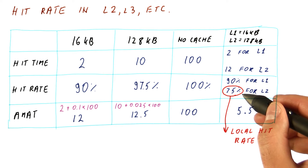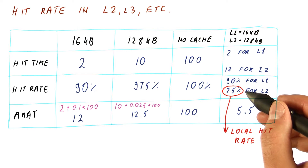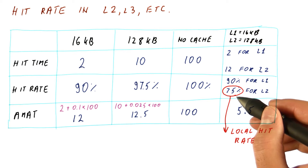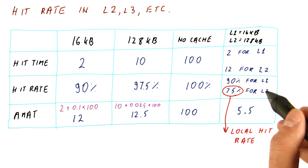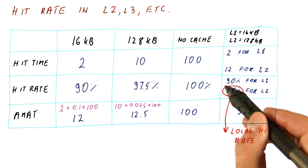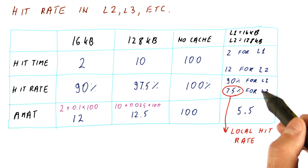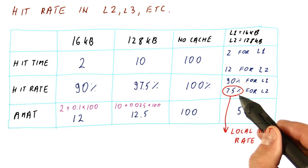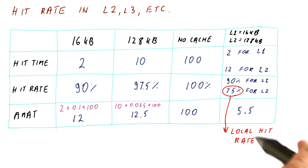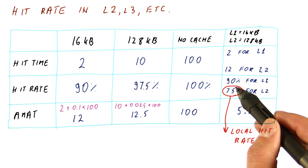A local hit rate is the hit rate that the cache actually observes — of all the accesses to that cache, this many are hits. Note that all the accesses to a level 2, level 3, etc. cache are not all the accesses that the processor makes. Accesses that have a lot of locality get to be L1 hits and never reach these caches, so the local hit rate of higher-level caches is lower because they never see the easy accesses.